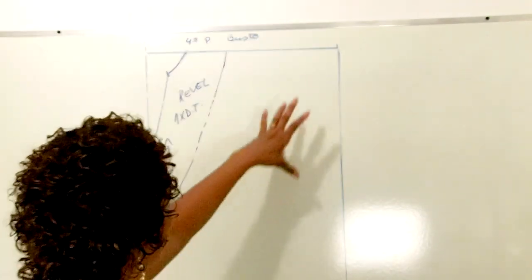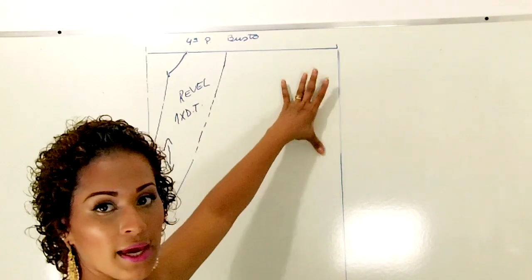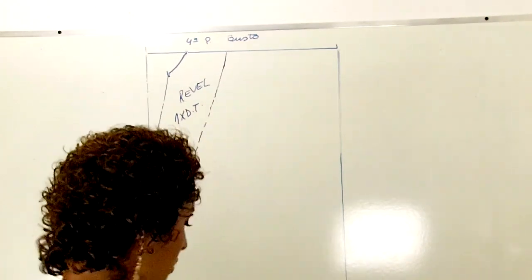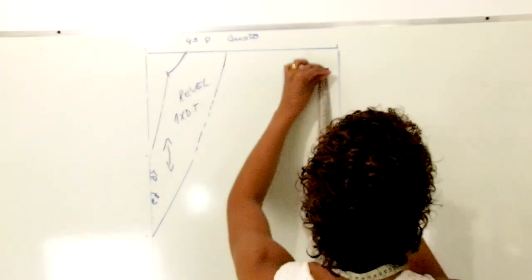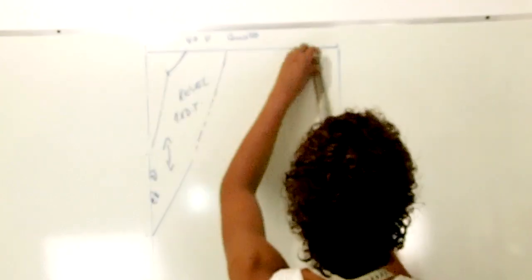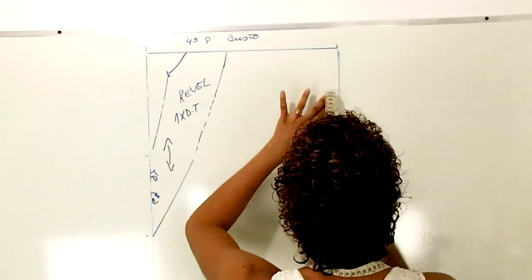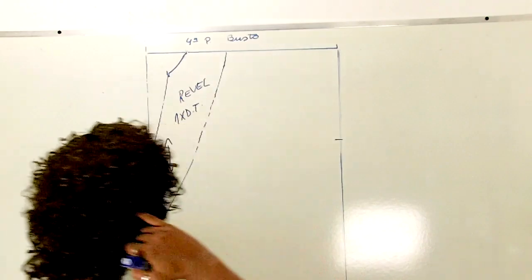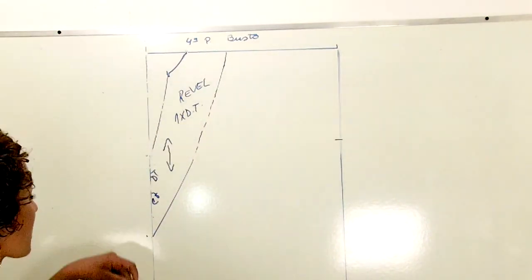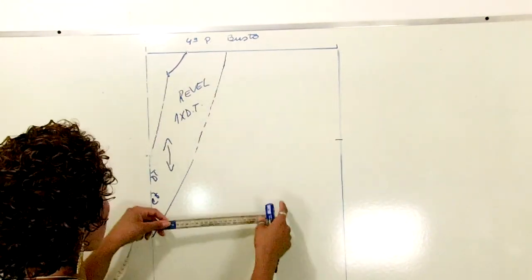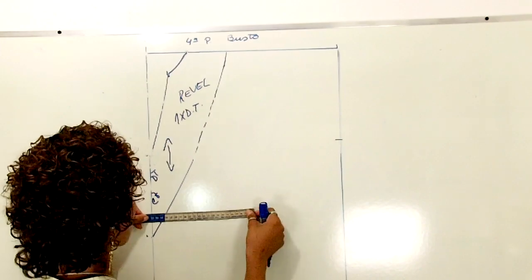Você vai determinar aqui quantos você quer pra abertura de manga. Eu vou botar mais ou menos uns 20 centímetros. Eu vou marcar aqui. Só vou dar um pique pra depois me facilitar na hora da costura. Então, aqui vai ser a minha manga. E aqui, daqui pra dentro, eu vou marcar 23 centímetros.